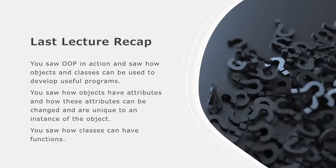To recap the last lecture, we showed you what OOP looks like in action — what it looks like in a real program. You saw how objects have attributes, how these attributes can be changed, and how they're unique to a certain instance of an object. They're not shared between all objects; they are unique to each instance of the class. We also saw how classes have functions and how these functions can be used by the instances of the classes, which is what we call objects.